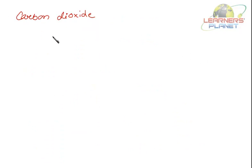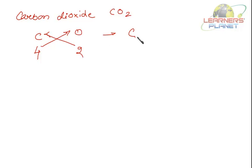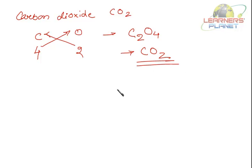For carbon dioxide, as the name suggests you can write CO2. Carbon has a valency of 4 as it belongs to group 4, and oxide is minus 2. Cross over the valencies and you get C2O4, but since CO2 doesn't exist as a dimer, the simplified formula is written as CO2.